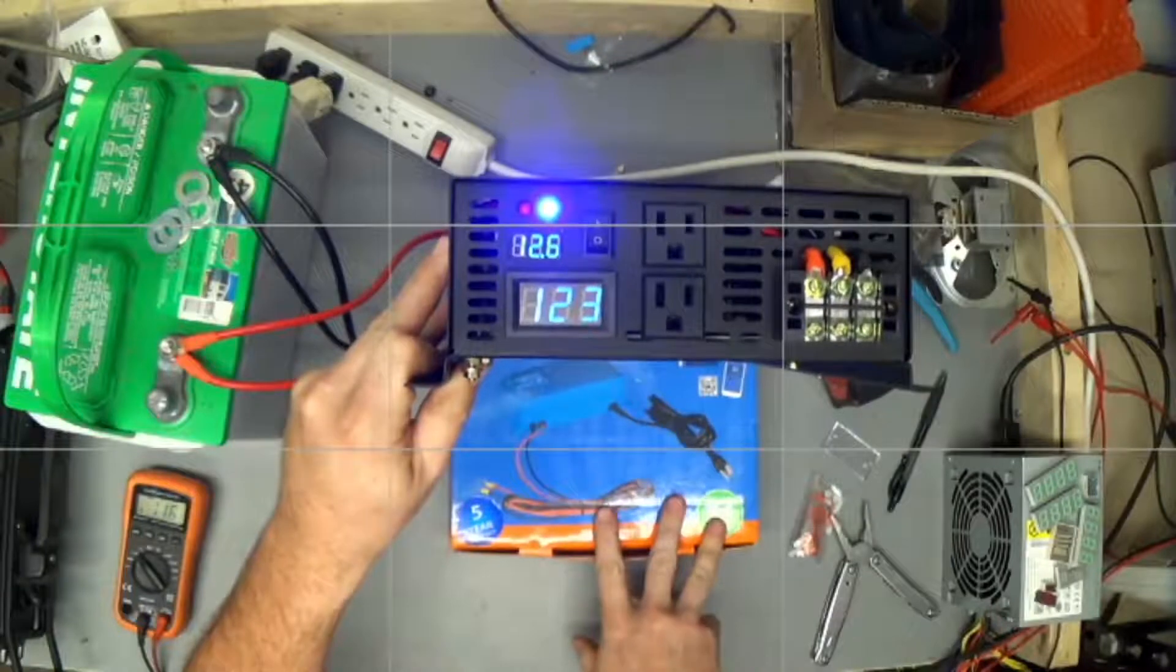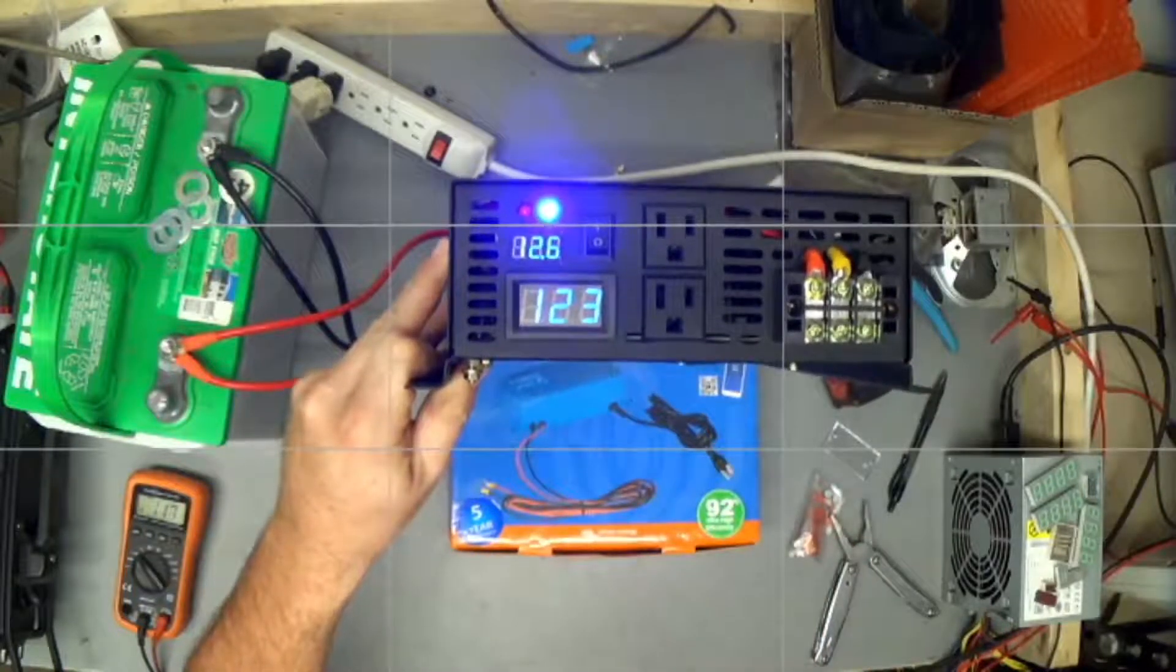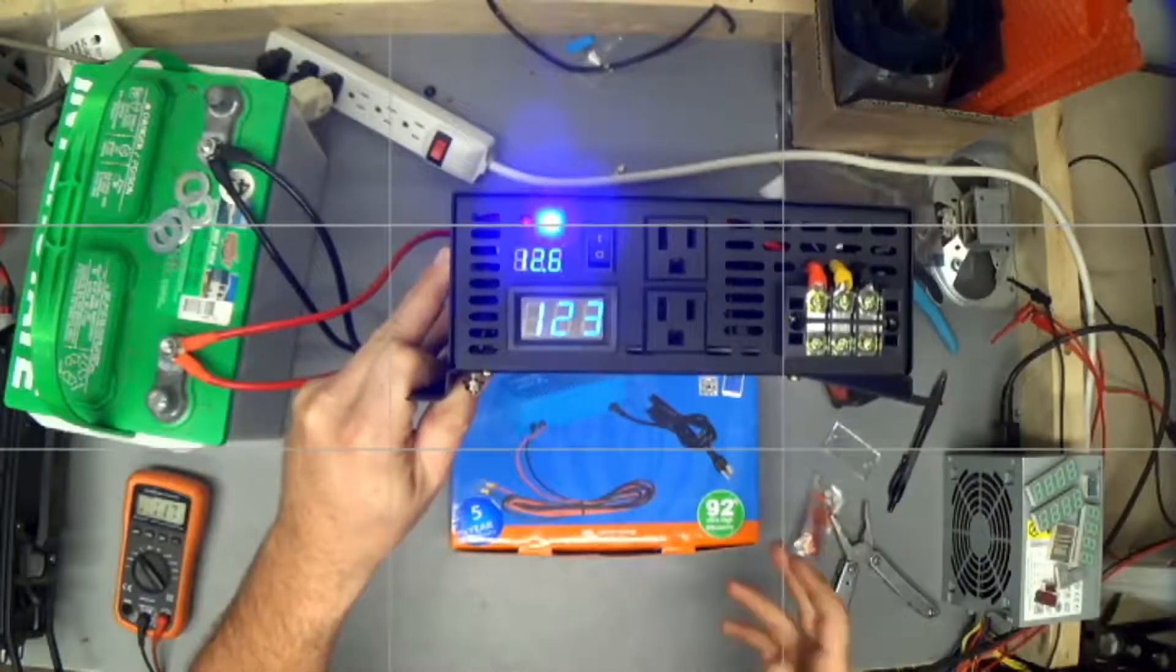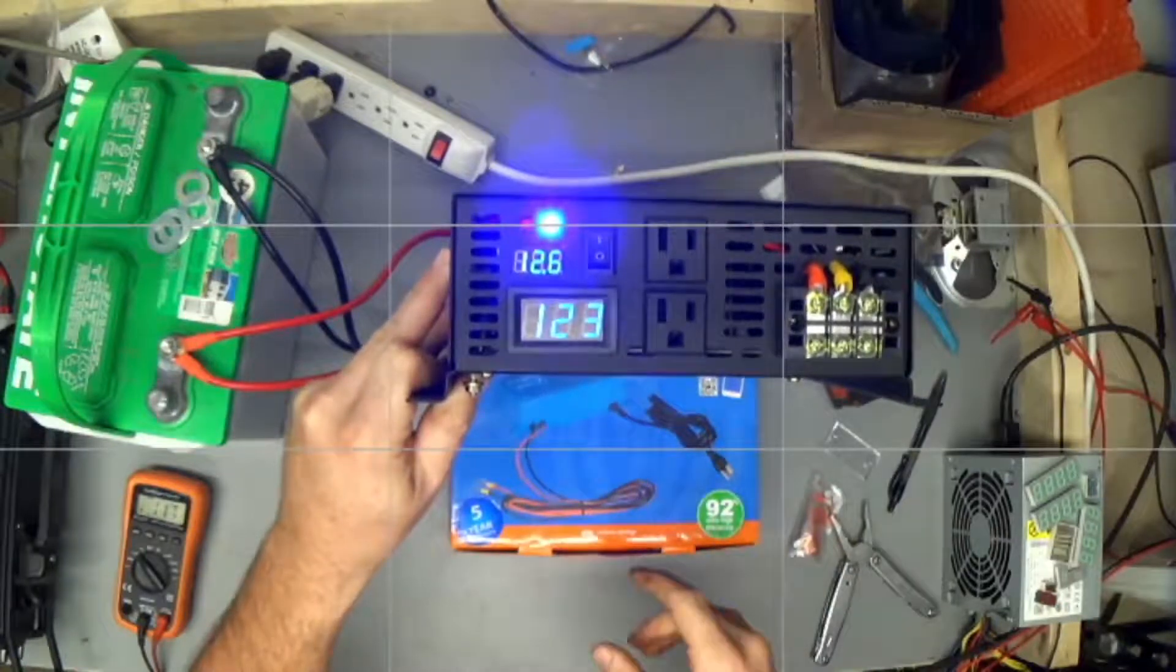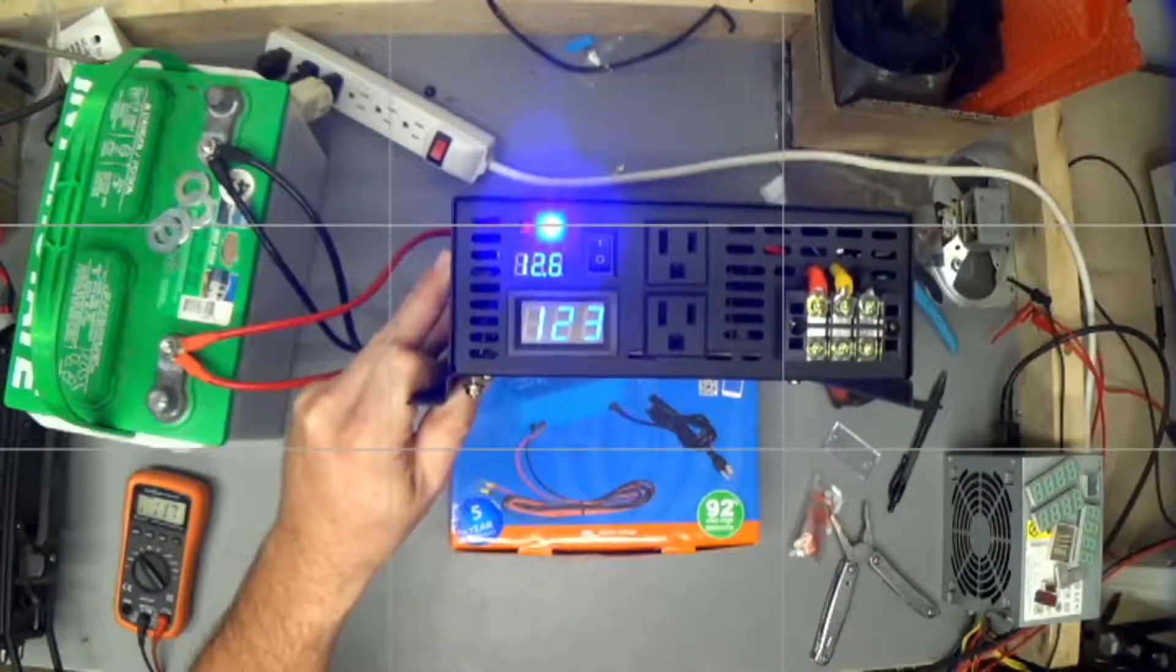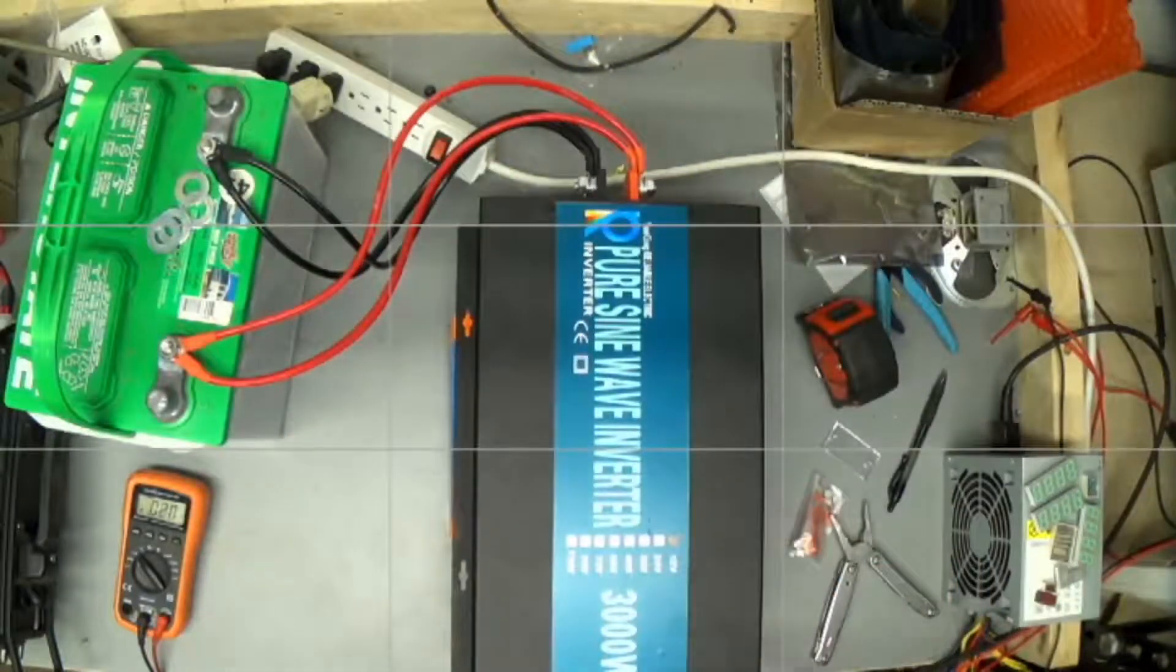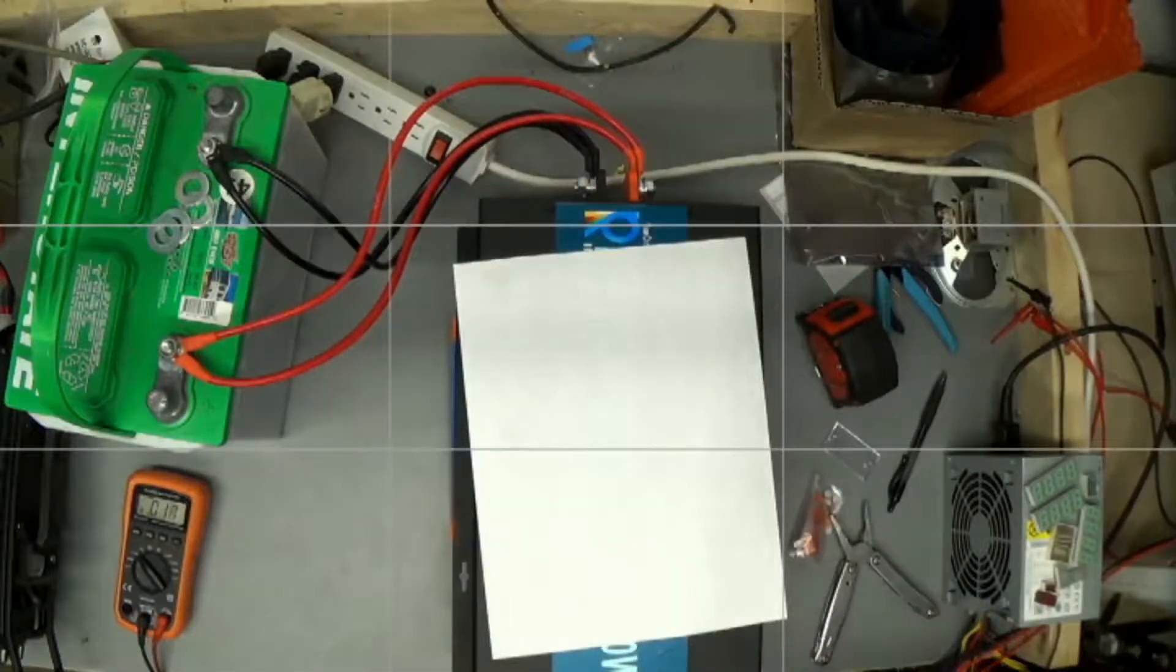Your 120 volt line voltage that you generally run all of your shit in your house off of is actually half of a center tapped 240 volt single phase service, right? So let's draw a picture. Pictures are good.